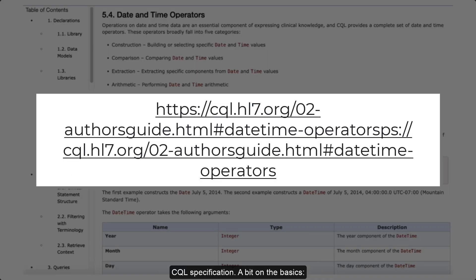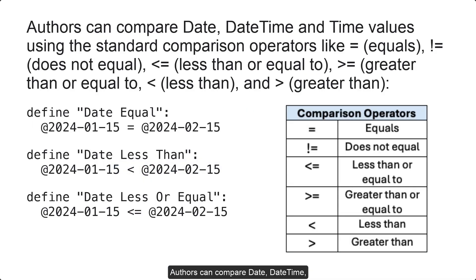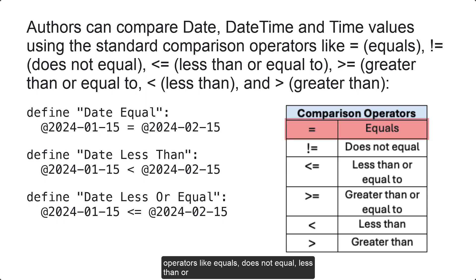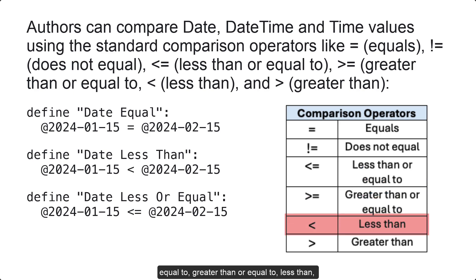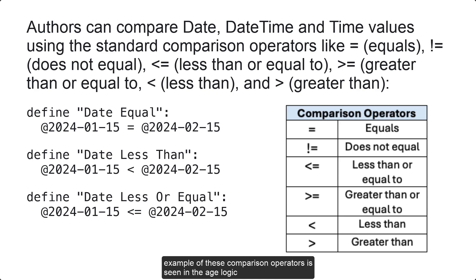A bit on the basics. Authors can compare date, date-time, and time values using the standard comparison operators like equals, does not equal, less than or equal to, greater than or equal to, less than, and greater than. A great example of these comparison operators is seen in the age logic across almost all of the CMS program eCQMs.